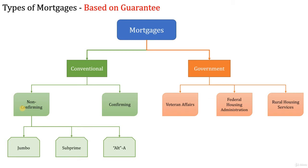The target market for Alt-A loans is borrowers with strong credit quality but non-standard needs, for example limited documentation — you don't need extensive documentation for Alt-A loans. Self-employed individuals and those who need to process the loan quickly are also target borrowers. Typical guidelines require a FICO credit score of 680 or above, with a higher FICO required for increased LTV levels. The maximum loan-to-value ratio should be in the 75% to 90% range.